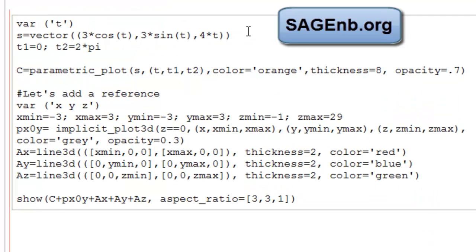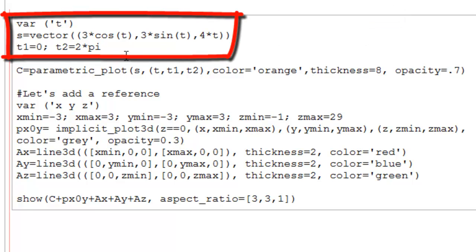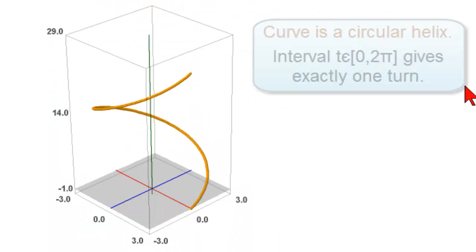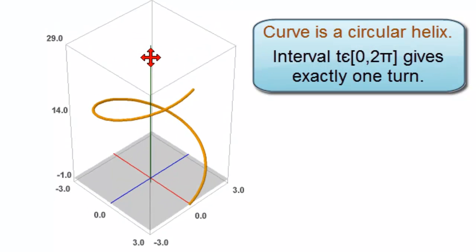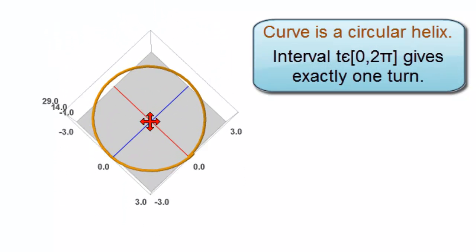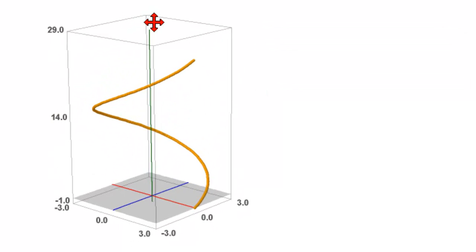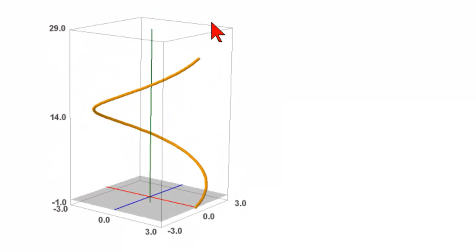So here we are in Sage notebook. Here's our vector s: 3 times cosine t, 3 times sine t, 4t. Our interval is from 0 to 2π. We're doing a parametric plot. There it is. Notice what it is, is a helix, a circular helix. And you can see it goes around exactly once there. So we're looking for the length of that piece of circular helix.